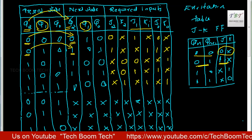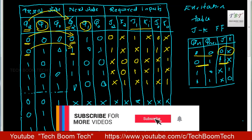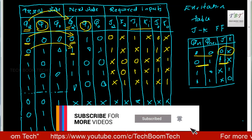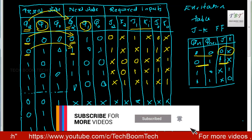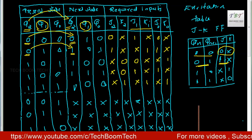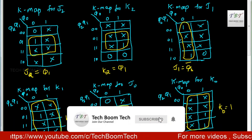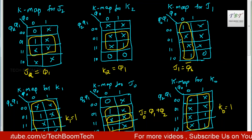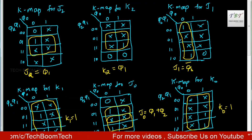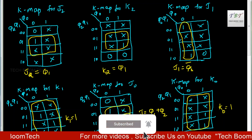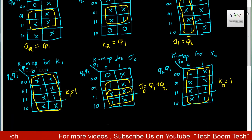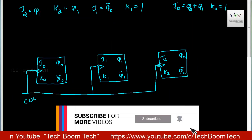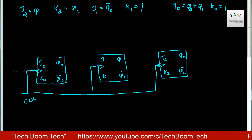Here are all the input values. The next step is to form the K-map. The present state variables are Q2, Q1, and Q0. We form K-maps for all inputs and derive all the Boolean expressions for the JK flip-flop inputs.